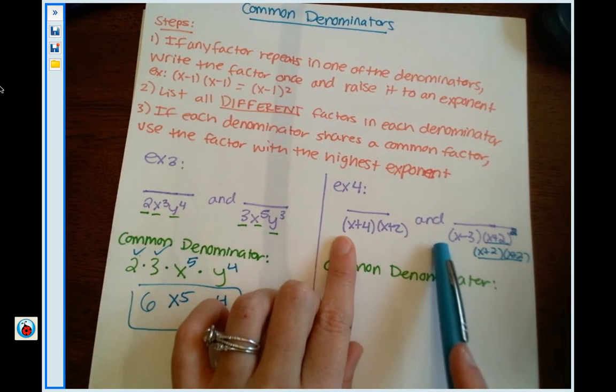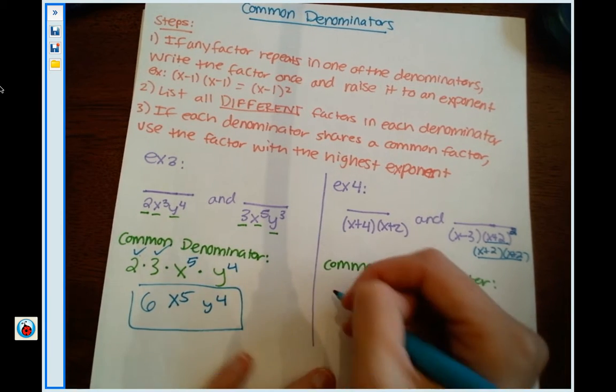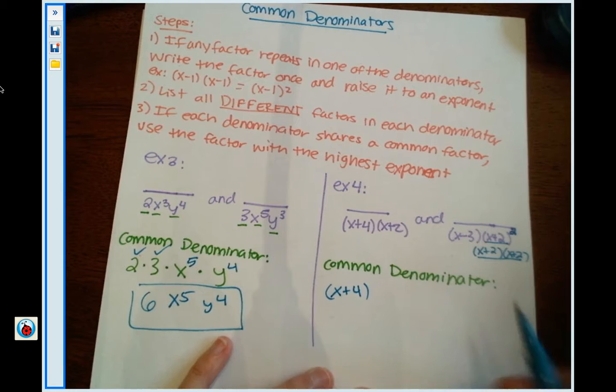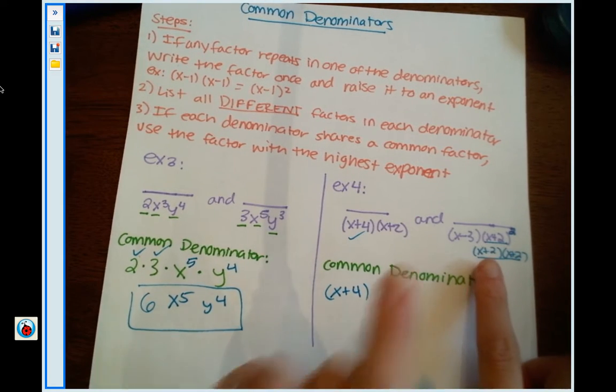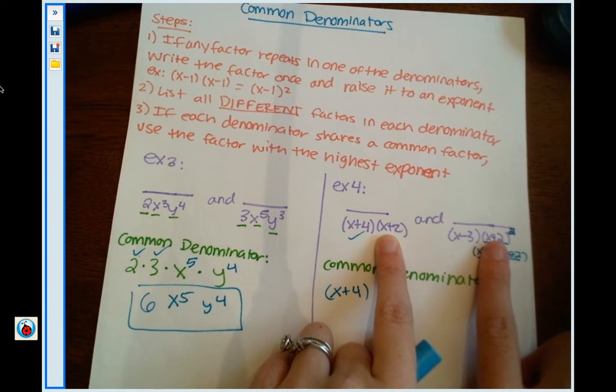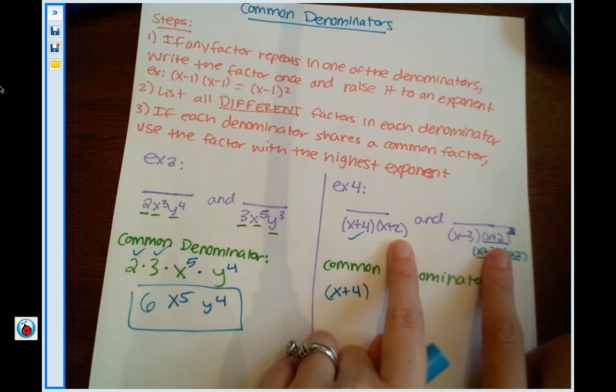I see an x plus 4 here, no x plus 4's over here, so I'm going to list x plus 4. That one's done. I see an x plus 2 here and here. What do I do? There's one in each denominator.